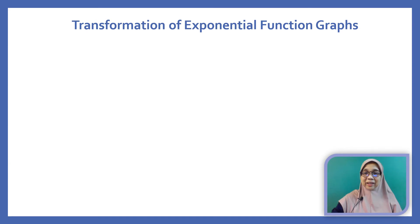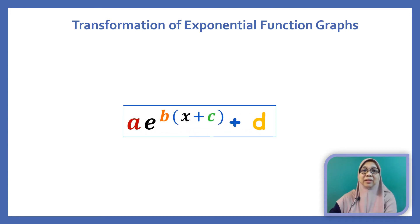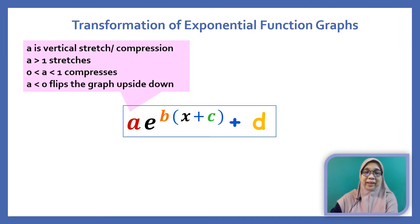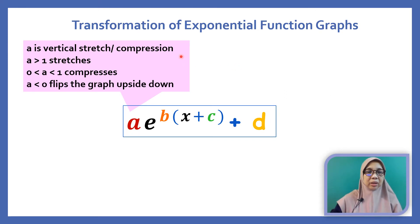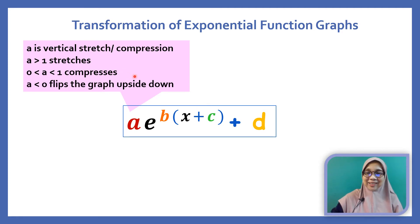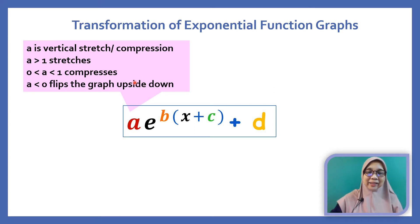Here is the transformation rule for the exponential graph. A is the vertical stretch or compression. When the value of A is greater than 1, the graph is stretched. When A is a fraction, the graph is compressed. When A is negative, the graph is flipped upside down.